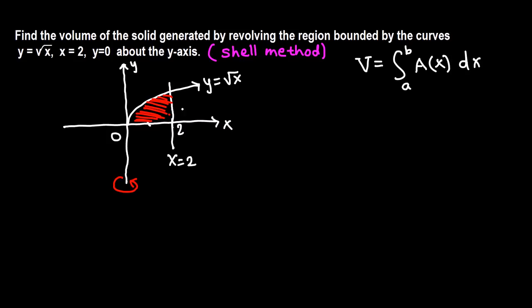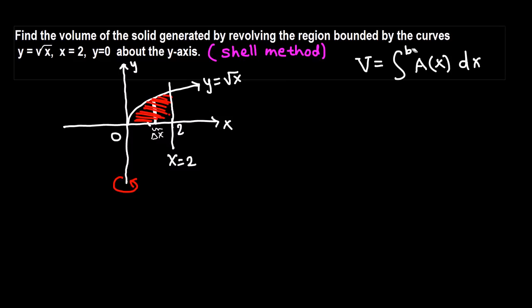In disk and washer method we use a perpendicular slice, but in shell method we use a rectangle parallel to the axis. Since we are revolving about the y-axis, the rectangle of small thickness dx is parallel to it. This dx suggests the curve should be written as a function of x, which is already the case. The sample rectangle can be taken anywhere from 0 to 2, so our limits of integration are 0 to 2.